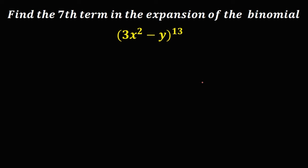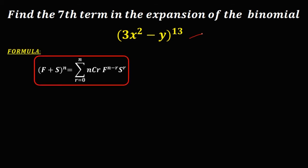Let's solve this problem. Find the 7th term in the expansion of the binomial equation. Using the binomial theorem formula, the first term f is 3x squared, the second term s is negative y, and n, the exponent, is 13.